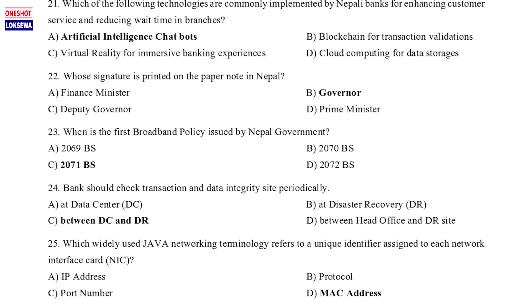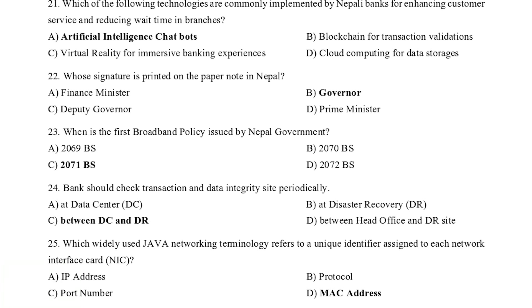Question 23: When was the first broadband policy issued by the Nepal government? a. 2069 BS, b. 2070 BS, c. 2071 BS, d. 2072 BS. Question 24: Banks should check transaction and data integrity between a data center (DC) and a disaster recovery (DR) site periodically. Question 25: Which widely used Java networking terminology refers to a unique identifier assigned to each network interface card (NIC)? a. IP address, b. Protocol, c. Port number, d. MAC address.